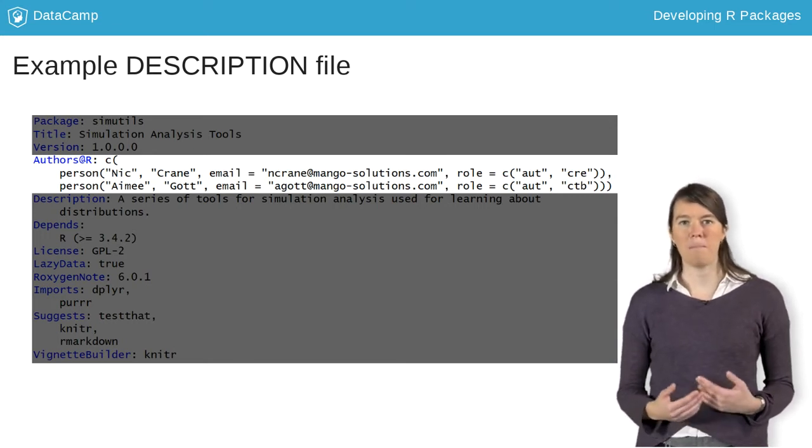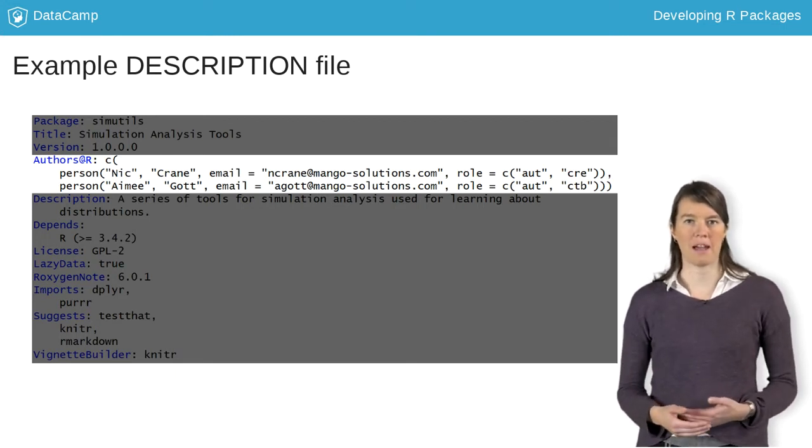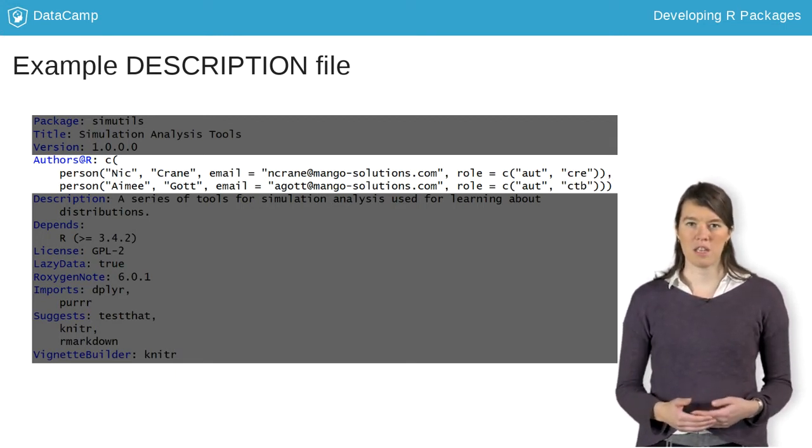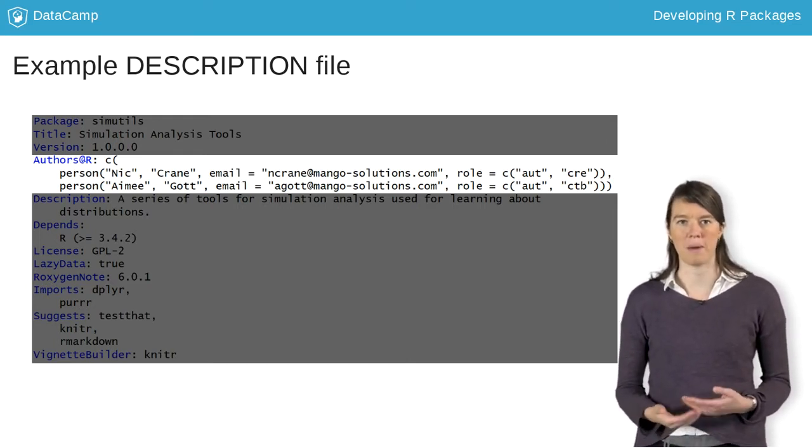The role is an abbreviation and there are many possibilities you could use, but most common for R packages are CRE for the package maintainer, AUT for an author, CTB for contributors, and CPH for the package copyright holder. This is often used when a company owns the copyright on a package.